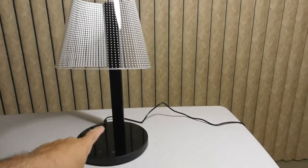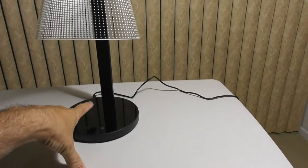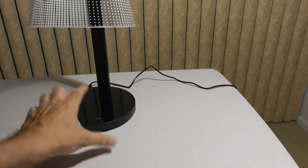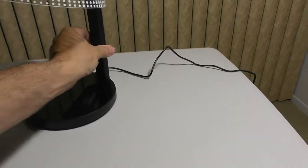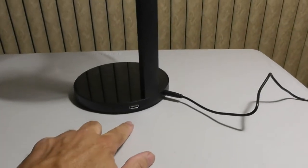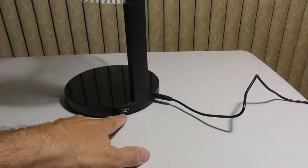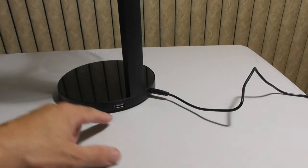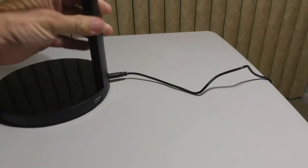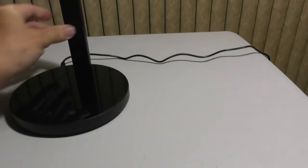The lamp has a built-in wireless cell phone charger right at the top over here. On the side, it also has a USB port for your cell phone in case you do not have wireless charging. It comes with an AC adapter, plugs into the wall.